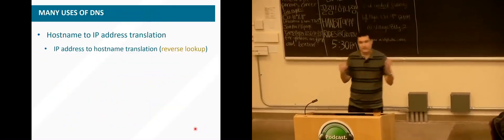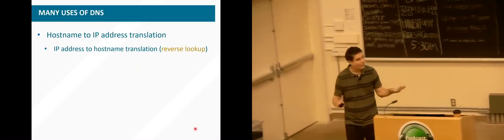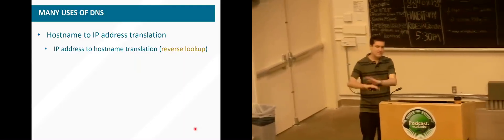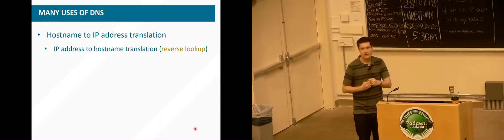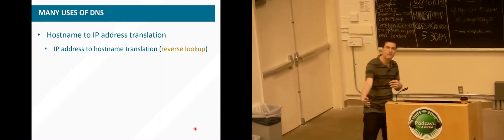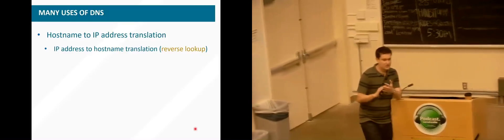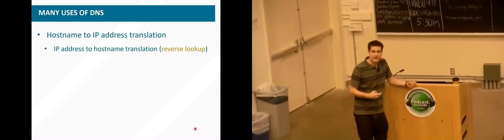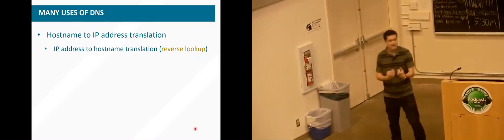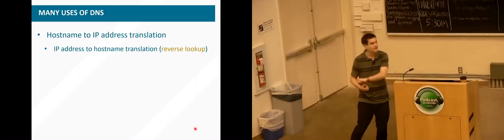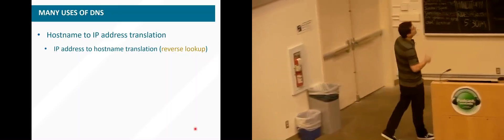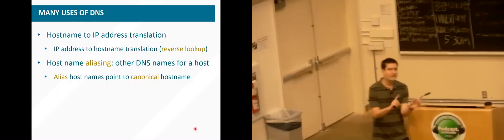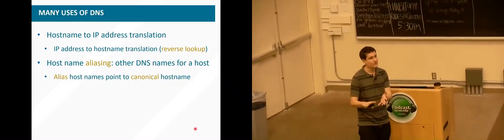DNS is a network service distributed around the world. It does the translation between a host name and an IP address — give it a host name, and it returns an IP address. This changes the process of sending data into two steps: first figure out the IP address, then open a connection to that destination. It can also do this in reverse, and it has other purposes — we'll see this when we talk about content distribution networks later in the course.